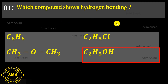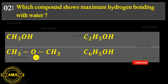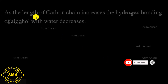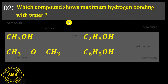Next MCQ: Which compound shows maximum hydrogen bonding with water? Options: CH3OH, C2H5OH, CH3OCH3, C6H5OH. As the length of the carbon chain increases, the hydrogen bonding of alcohols with water decreases. So the exact answer is CH3OH — methyl alcohol.